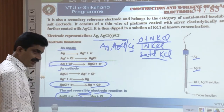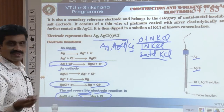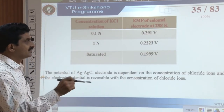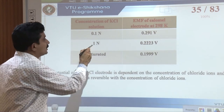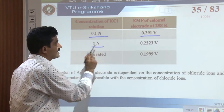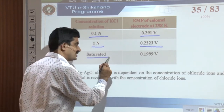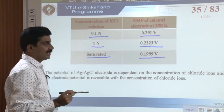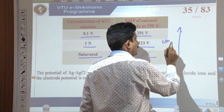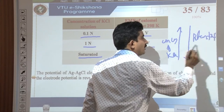The potential of the Ag-AgCl electrode depends on the concentration of KCl used as the electrolyte. When 0.1 normal KCl is used, the potential is 0.291 V. When 1 normal KCl is used, the potential is 0.2223 V. When saturated KCl is used, the potential is 0.199 V. As you increase the concentration of KCl, the potential of the silver-silver chloride electrode decreases.